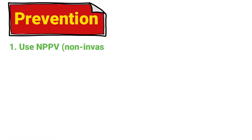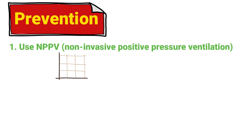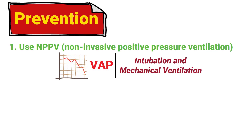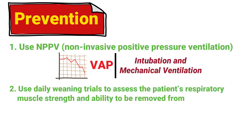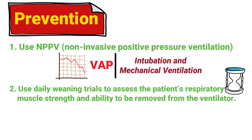First, we should use non-invasive positive pressure ventilation whenever possible, as this significantly decreases the chances of ventilator-associated pneumonia compared to intubation and mechanical ventilation. We should also use daily weaning trials to assess the patient's respiratory muscle strength and ability to be removed from the ventilator. The risk of VAP is associated with the length of time on the machine, so decreasing that time will decrease the chances of this type of pneumonia.